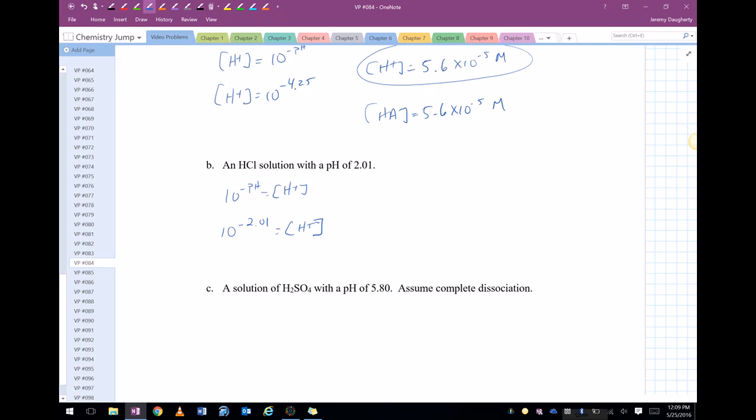Which gives me 9.77, I only want two sig figs, so 9.8 times 10 to the negative 3rd. So that's the molarity of the HCl.